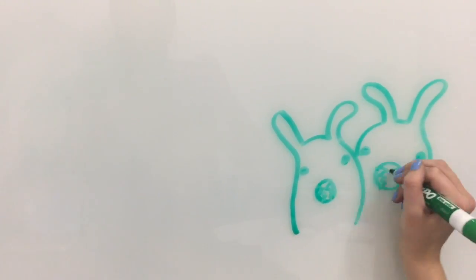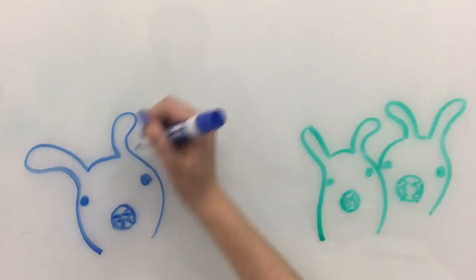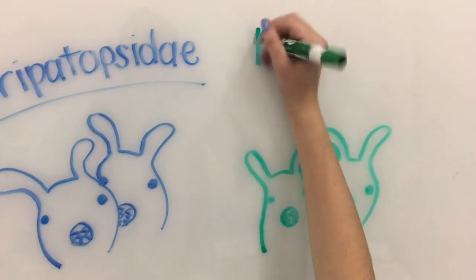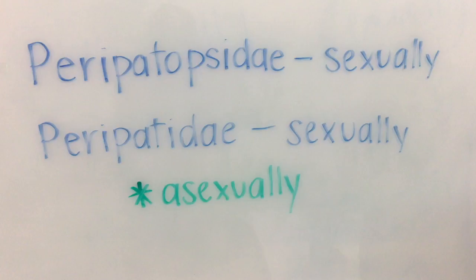Let's start with where the life of the Onychophora begins. There are two families of the Onychophora: Peripatidae and the Peripatopsidae. The Peripatopsidae reproduce sexually, while the Peripatidae also reproduces sexually, but one species produces asexually.